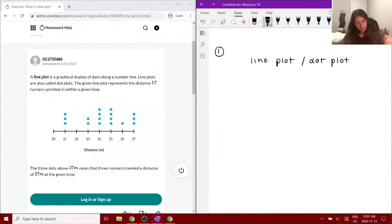So we have 20 meters, 21, 22, 23, 24... running out of room here... 25, 26, and 27. Ideally, you know, evenly spaced. They all represent the distance in meters.